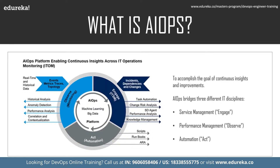Gartner explains how an AIOps platform works through a diagram. AIOps has two main components: big data and machine learning. It requires a move away from siloed IT data in order to aggregate observational data alongside engagement data inside a big data platform. AIOps then implements a comprehensive analytics and machine learning strategy against the combined IT data. The desired outcome is automation-driven insights that yield continuous improvements and fixes. AIOps can be thought of as a continuous integration and deployment for core IT functions, bridging three different IT disciplines: service management to engage, performance management to observe, and automation to act.